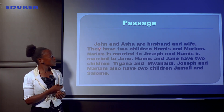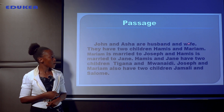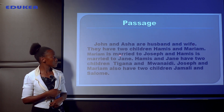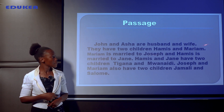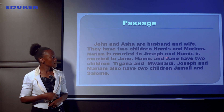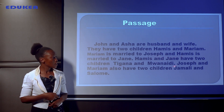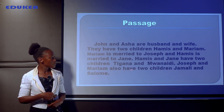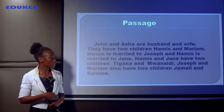Johnny and Asha are husband and wife. They have two children, Hamisi and Mariam. Mariam is married to Joseph and Hamisi is married to Jane. Hamisi and Jane have two children, Tigana and Mwanaidi. Joseph and Mariam also have two children, Jamali and Salome.